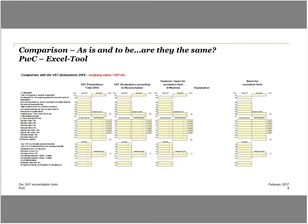The VAT return resulting from the turnover reconciliation has to be compared with the four quarterly filed VAT returns that were submitted to the Swiss tax authorities. With the comparison of the VAT declarations filed and the VAT declarations according to the turnover reconciliation, the variances and differences can be figured out. The identified differences can be explained directly in the file and are therefore documented.